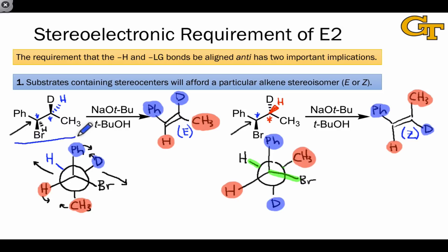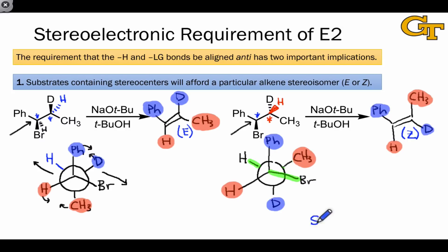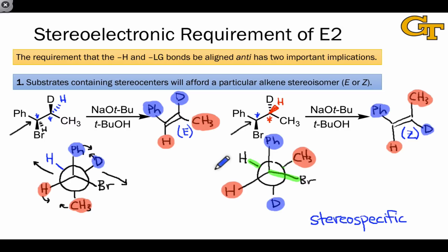These diastereomeric alkyl halide starting materials give rise to diastereomeric products, and a simple change in configuration switches the configuration of the product 100%. This is an example of a stereospecific reaction—a situation in which changing the configuration of the starting material leads to a change in the configuration of the product with 100% fidelity. In fact, the SN2 reaction works the same way: if we change the configuration of the electrophilic carbon when it's a stereocenter, that leads to a change in configuration of the product via 100% inversion of configuration. The origin of this stereospecificity in E2 is the anti-orientation of the hydrogen and leaving group required for good orbital overlap.